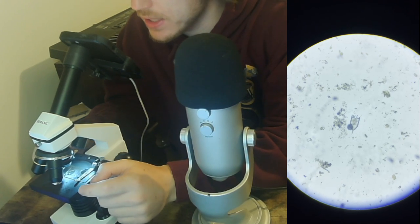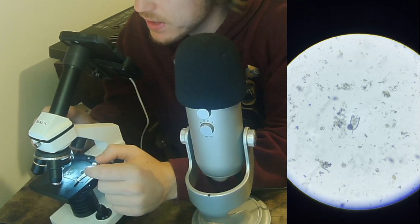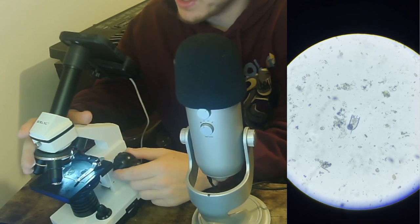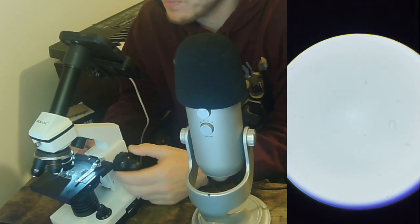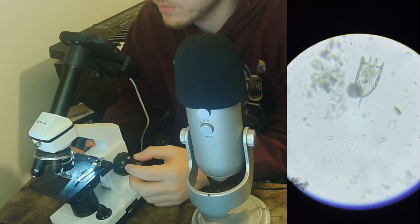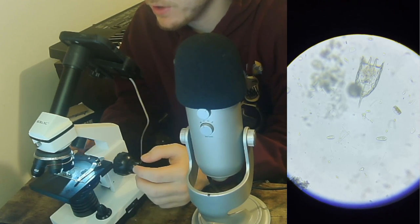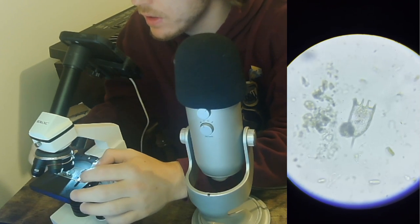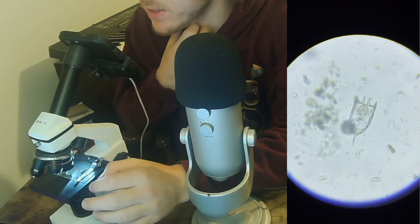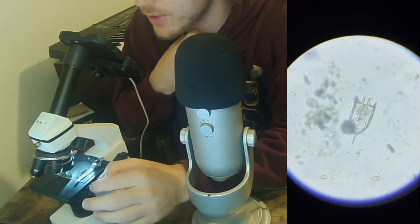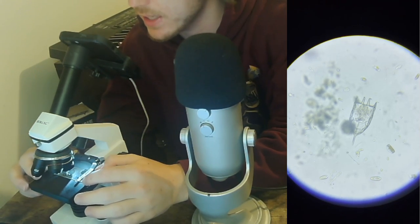He sort of looks like the vorticella but he has like teeth on his front. I guess he's not totally attached to a stalk. It's very interesting. Let's get closer to him. That's a very interesting little guy that I have not seen before. I am really not sure what he is. Maybe someone in the comments will know. That's a very interesting thing I've never come across anything like that before.